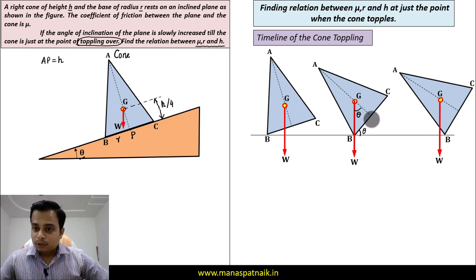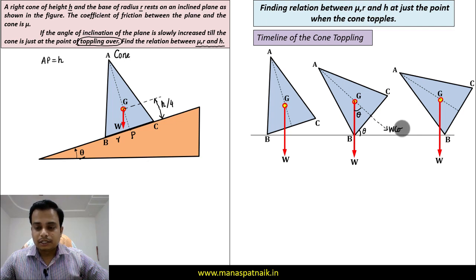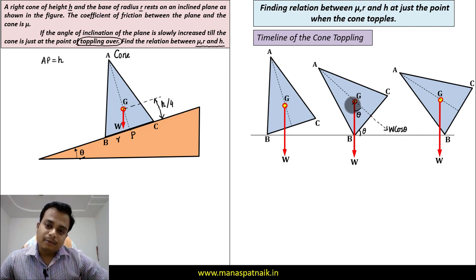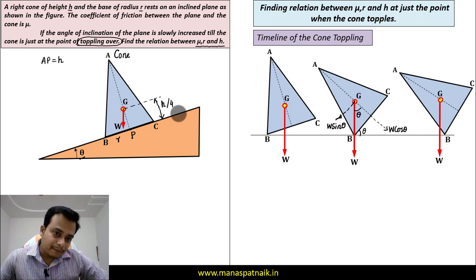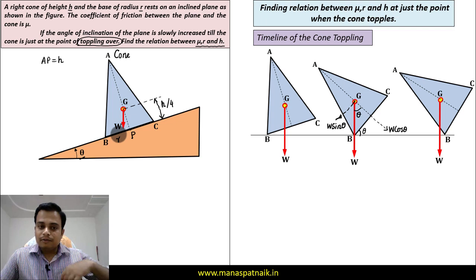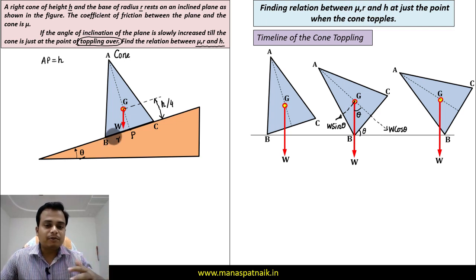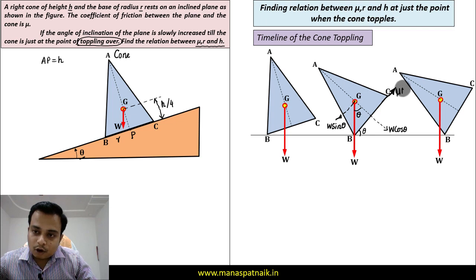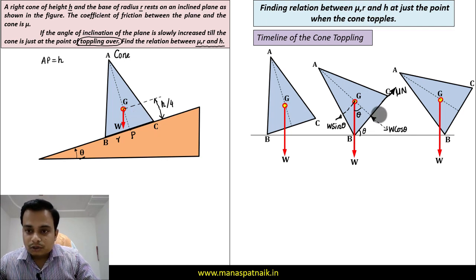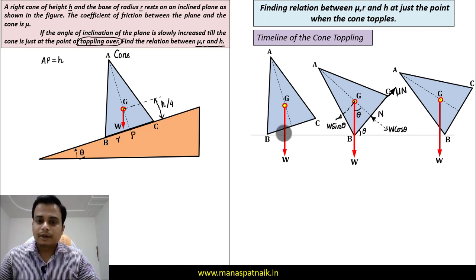If this is theta, that's also theta. Now W is going to have two components, one over here. This is what you call W cos theta, and one component will be here in this direction, and this is going to be W sin theta. Since this cone has been kept over this surface and this will obviously have a tendency to slide down the plane, therefore there is going to be friction up the plane, μN, and a normal. We are going to have a normal offered from the surface onto this cone, so this is going to be N.